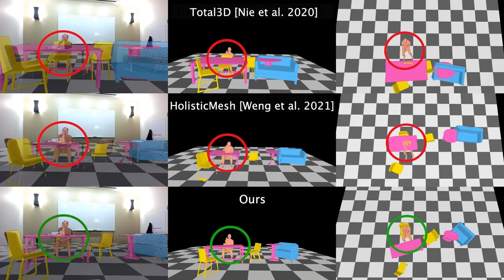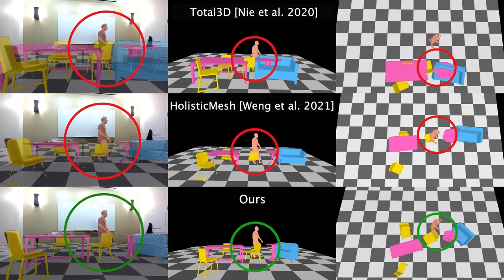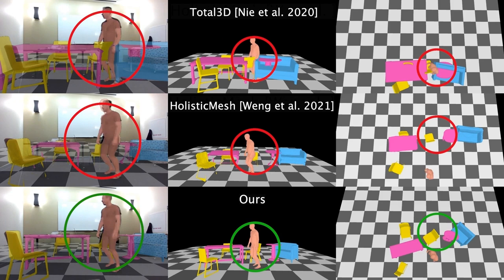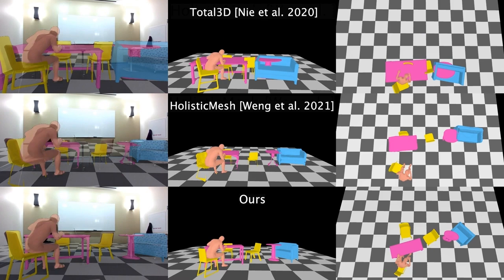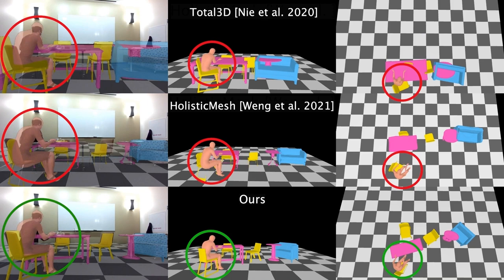In the results from Total3D Understanding, humans walk through the 3D scene, because the scale of the reconstructed scene in isolation from Total3D Understanding is inconsistent with estimated humans. HolisticMesh does not model the human scene contact explicitly, leading to estimated humans floating in the air.